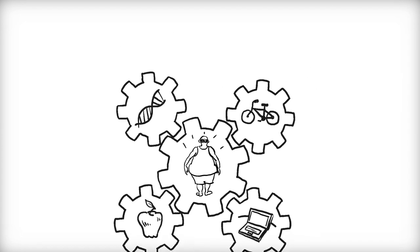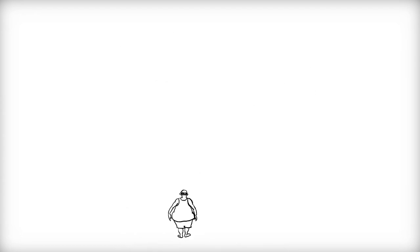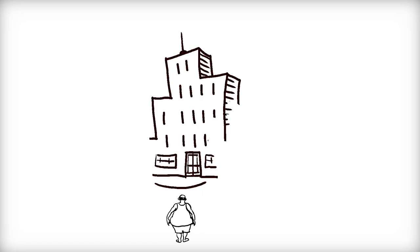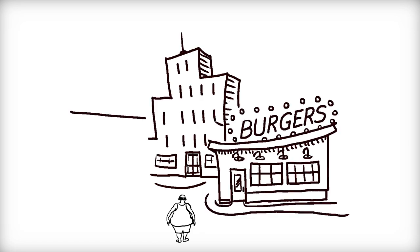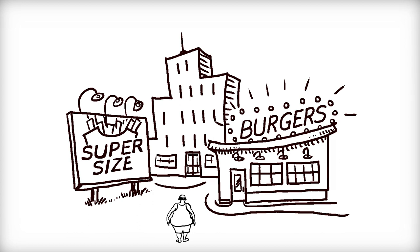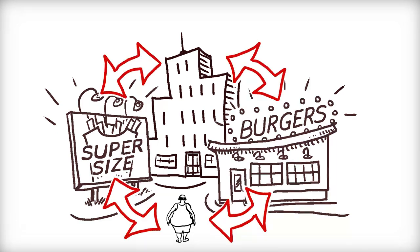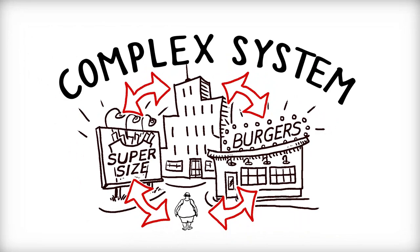But beyond the individual, there are other factors at play such as the local built environment, quick and easy access to junk food, and larger food industry practices such as trends in portion sizes, sugar, and fat content. The interaction of all these influences make obesity the product of what we call a complex system.